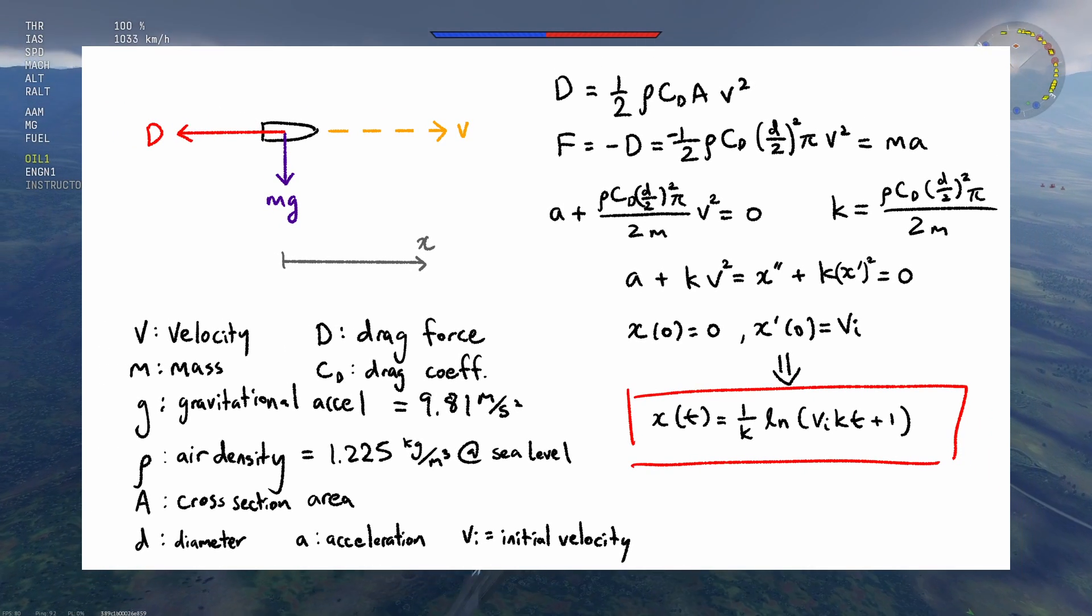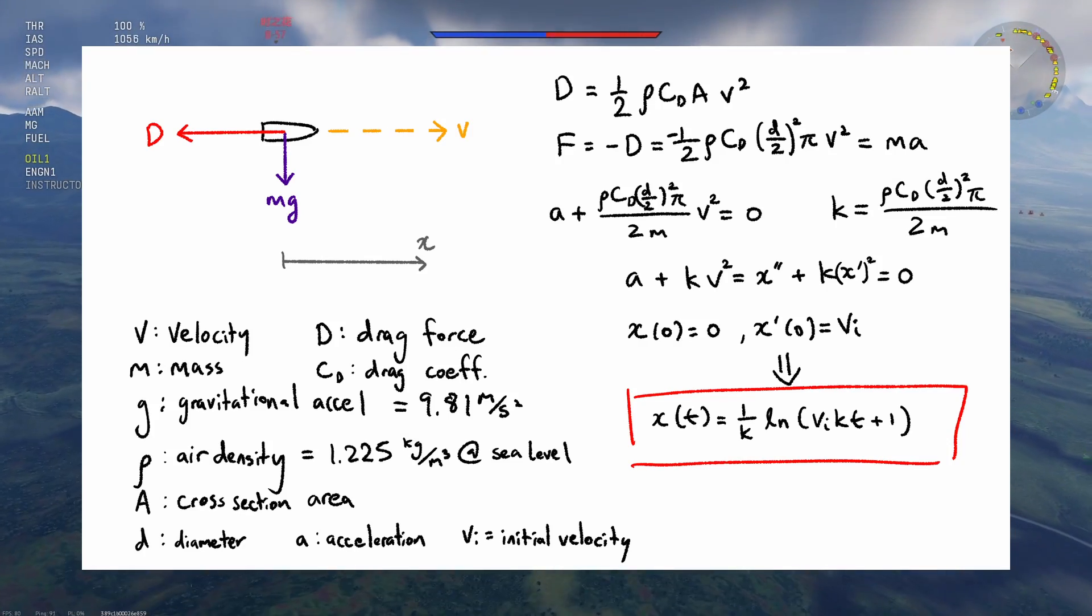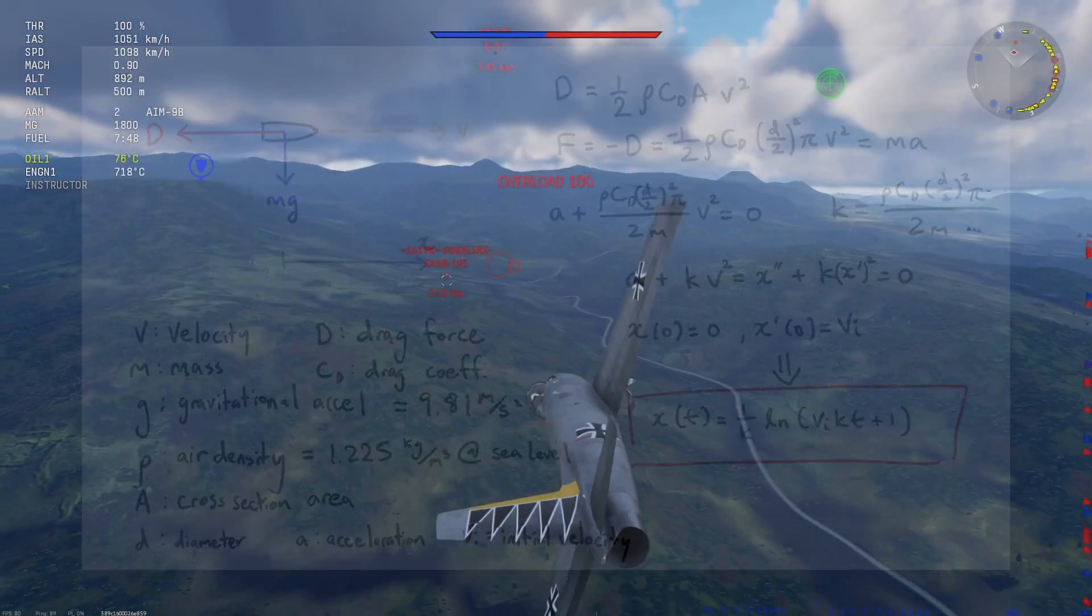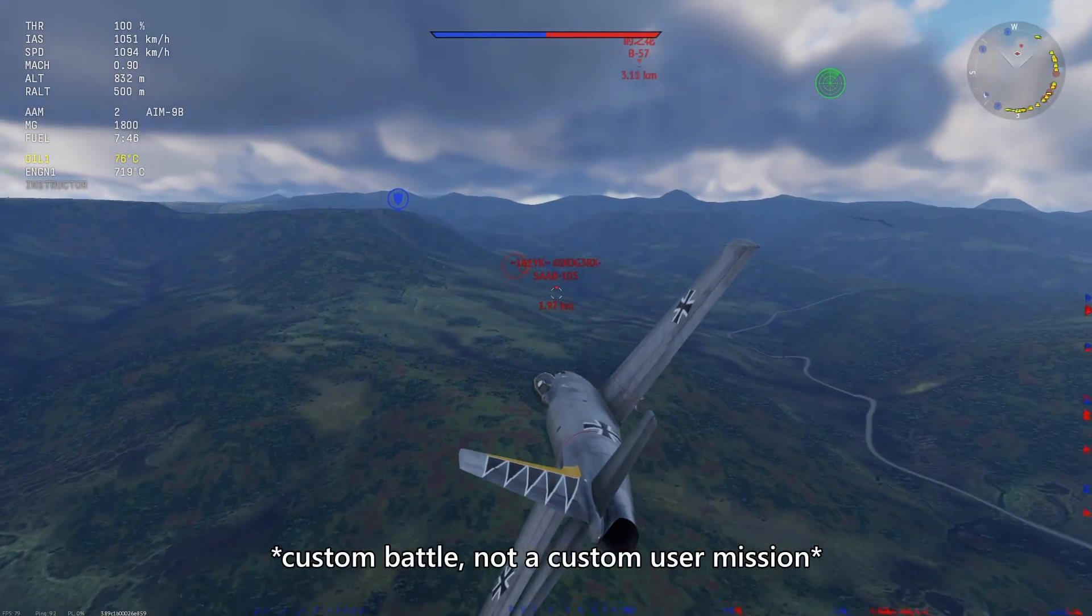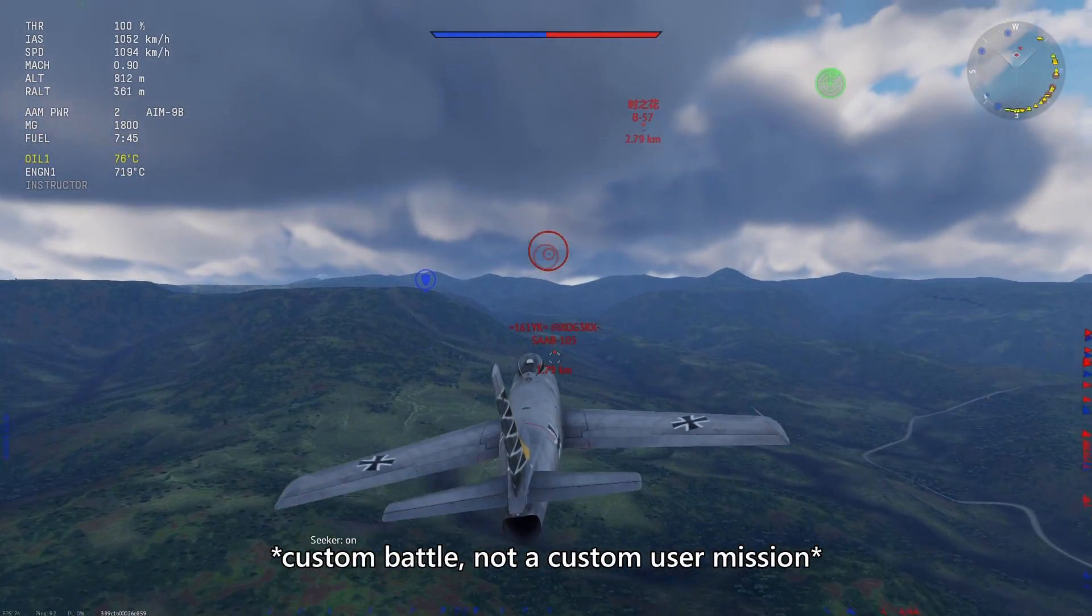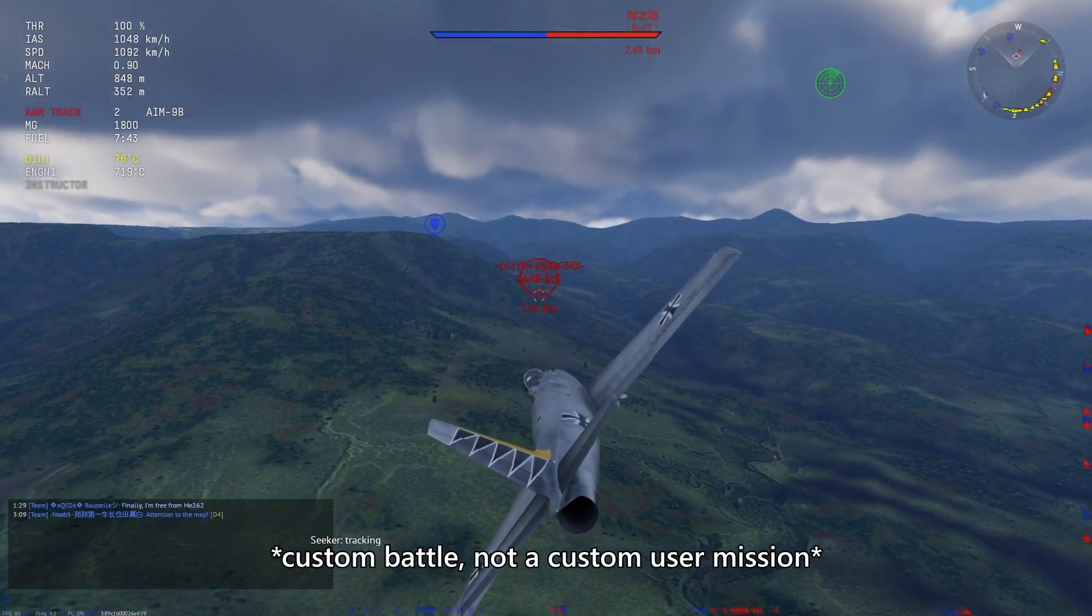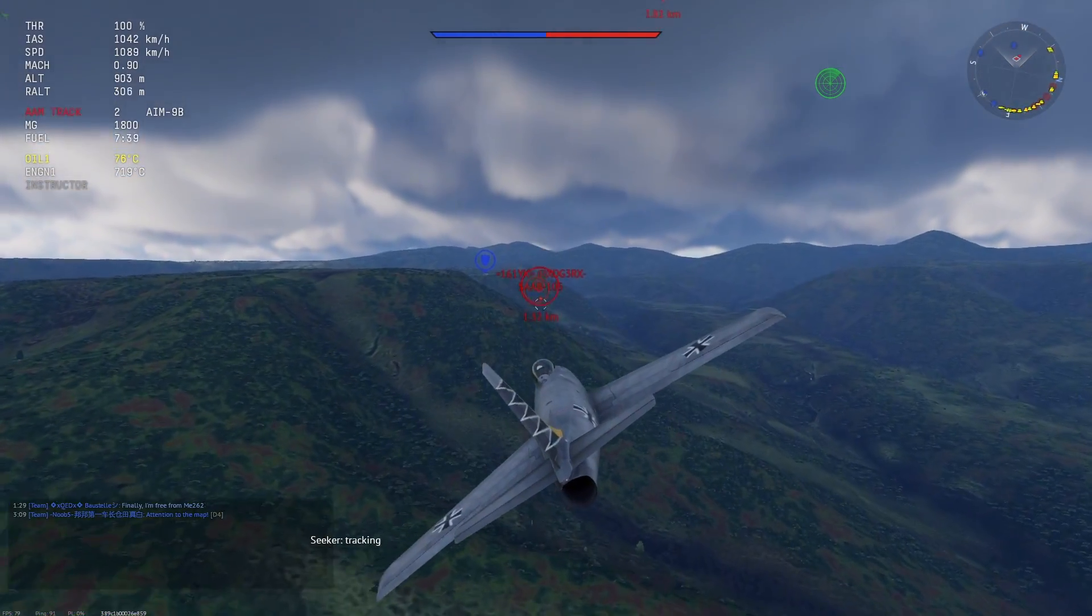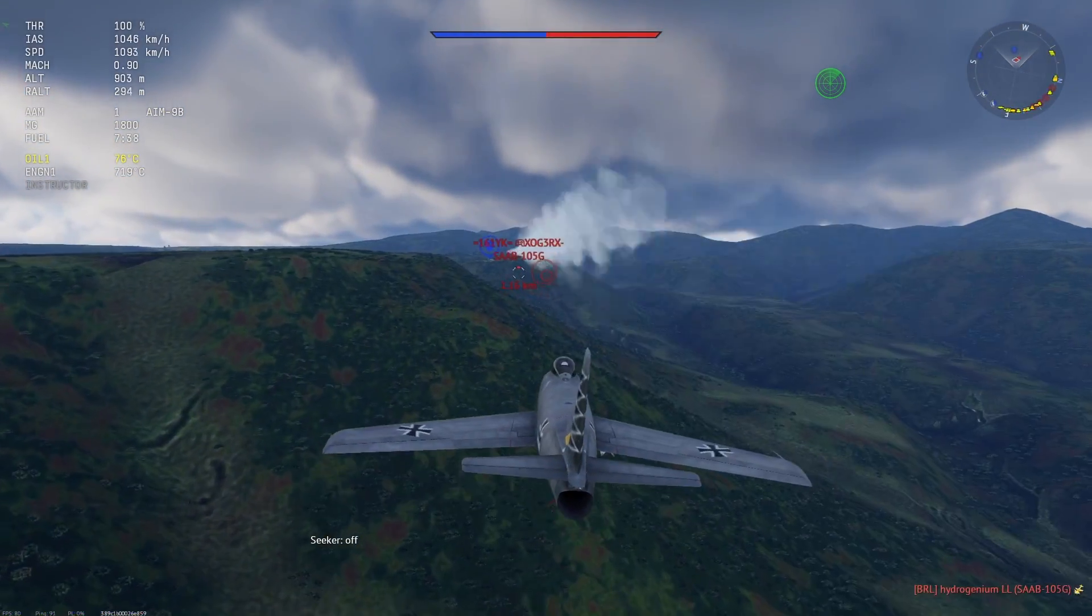Now to test the accuracy of this model compared to War Thunder's implementation, we need a way of firing a bullet horizontally and measuring its position over time. So I'll be using a custom mission to test this out with a plane that can ideally fire horizontally while on the ground, and has a set of belts that are high velocity but are also particularly draggy so that the drag effect will be very apparent in its results.